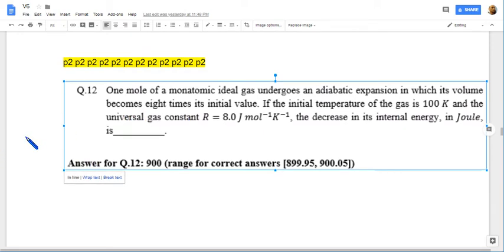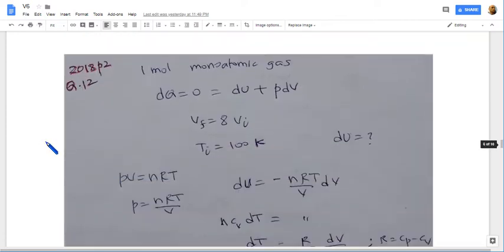So here is the solution. One mole of monoatomic gas. It is an adiabatic process, dQ = 0, and it equals dU plus pdV according to first law of thermodynamics. The final volume is 8 times initial volume. The initial temperature is 100 kelvin. What is the change in internal energy?